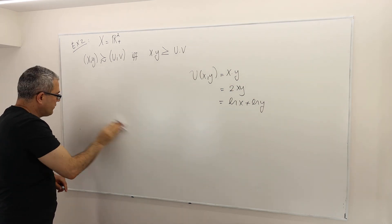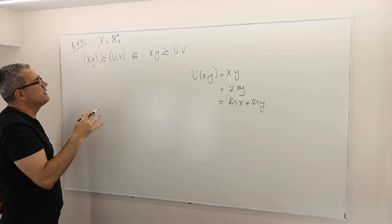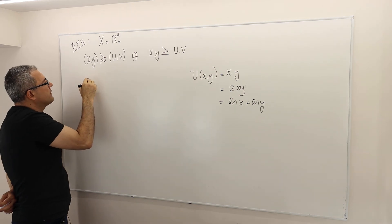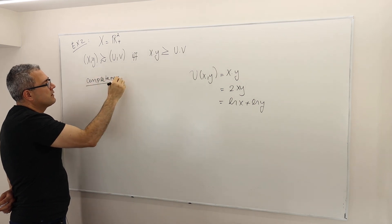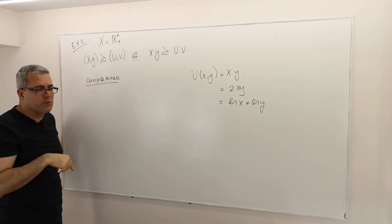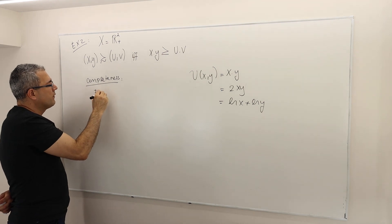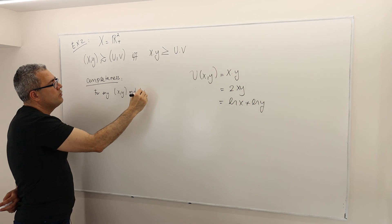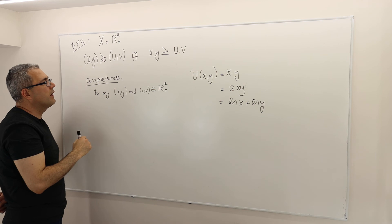But how do we prove this? Reflexivity is very simple. What we need is completeness, for example, because the previous example wasn't complete. But this one is complete. And why is that so? For any (x,y) and (u,v) you take from your set of alternatives,